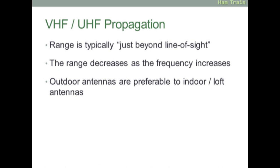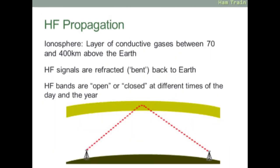A quick look now at VHF and UHF propagation. VHF and UHF is typically just beyond line of sight. If you can see it, potentially you can work it. The range of VHF and UHF decreases as the frequency increases, so UHF will typically have a lower range than VHF. A look now at HF propagation. This is where you can get your signals around the world. This relies on the ionosphere—common exam question, so remember this bit. The ionosphere is a layer of conductive gases between 70 and 400 kilometers above the earth. If you send an HF signal into the ionosphere, it's refracted or bent back down to the earth, so it can get a signal around the world. HF bands are either open or closed depending on the time of day and also the time of year.